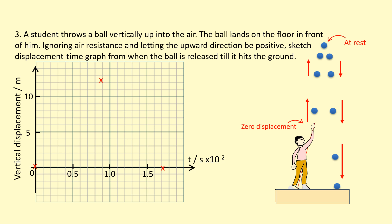The ball takes the same amount of time to come back down, returning to zero displacement at hand level, then continuing downward beyond it. Now focusing on the gradient: because the ball left the hand at high velocity, the gradient starts steep, then decreases as it slows down. At the very top the gradient is zero because the ball momentarily stops. Then the gradient becomes negative as the ball goes downward, getting steeper and steeper — eventually even steeper than when it left his hand. Joining these points gives a parabolic curve.